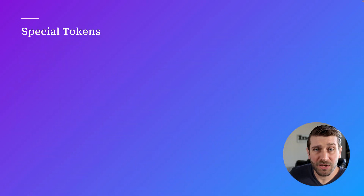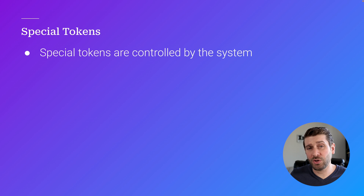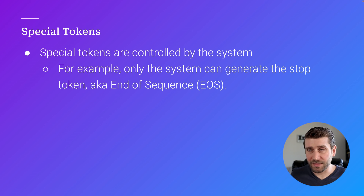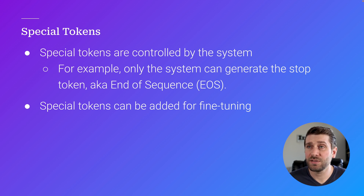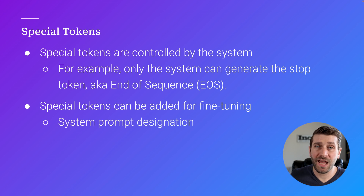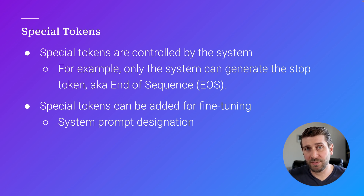Let's also talk about special tokens. These are tokens that are controlled by the system and used in very specific ways. A good example is the stop token — also called the end-of-sequence token — which tells the model when it should stop generating text. You can also add special tokens during fine-tuning. This is really useful for chat-based models that have a system prompt, so you can designate the system prompt with a special token before and after it, telling the model that this prompt is more important and should be followed.